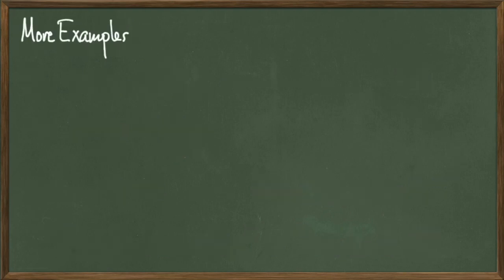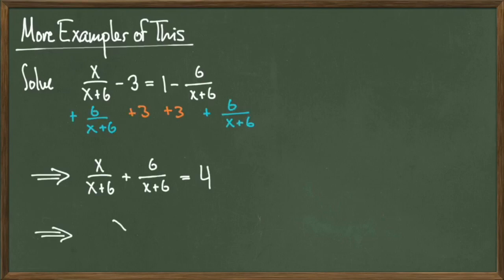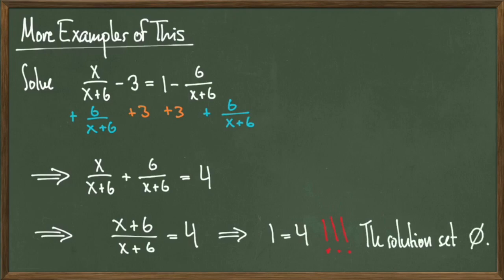For our next example, consider the rational equation x over x plus 6 minus 3 equals 1 minus 6 over x plus 6. We can solve this equation using the following steps, and we end up with the statement x plus 6 over x plus 6 equals 4.